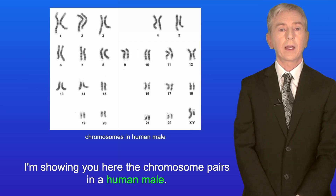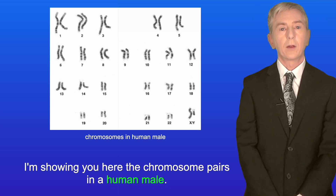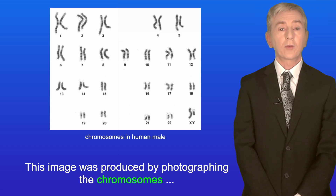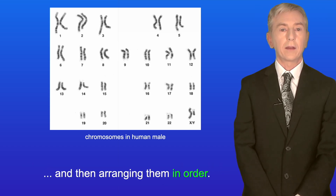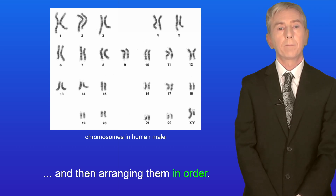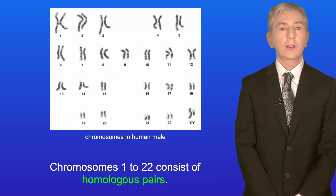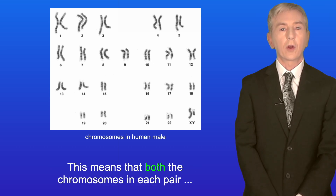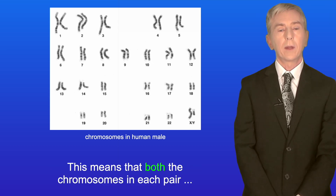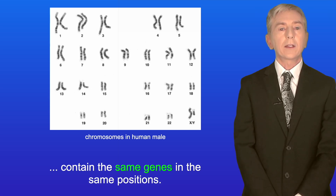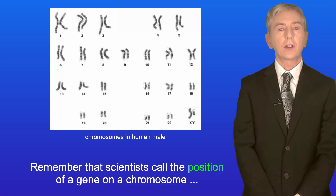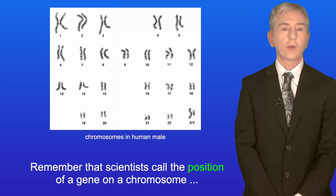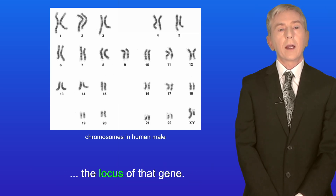I'm showing you here the chromosome pairs in a human male. This image was produced by photographing the chromosomes and then arranging them in order. Chromosomes 1 to 22 consist of homologous pairs, which means that both chromosomes in each pair contain the same genes in the same positions. Scientists call the position of a gene on a chromosome the locus of that gene.